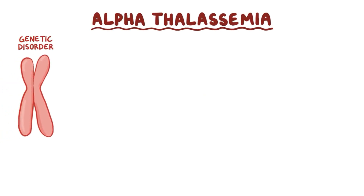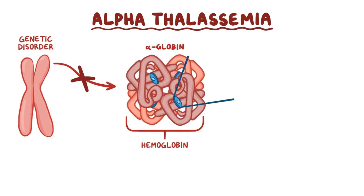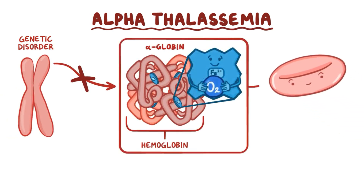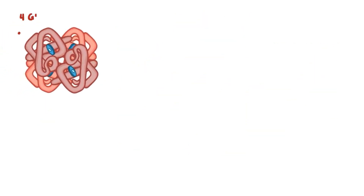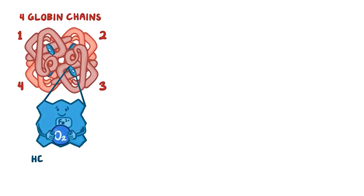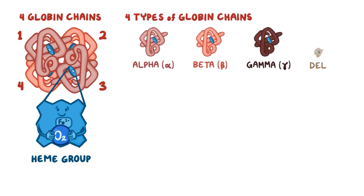Alpha-thalassemia is a genetic disorder where there's a deficiency in the production of the alpha-globin chains of hemoglobin, which is the oxygen-carrying protein in red blood cells. Normally, hemoglobin is made up of four globin chains, each bound to a heme group. There are four major types of globin chains: alpha, beta, gamma, and delta.